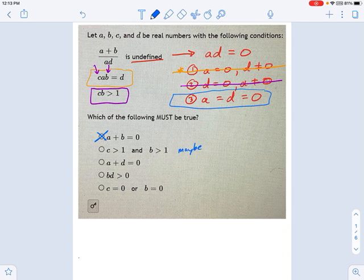A plus D equals zero? Ah, that one. That has to be true because A and D are both themselves zero.